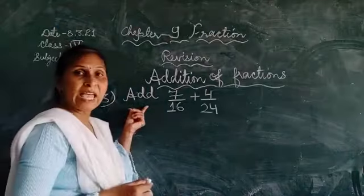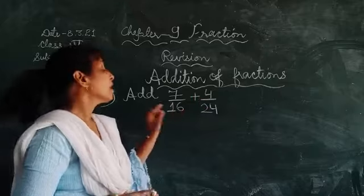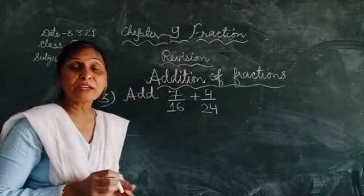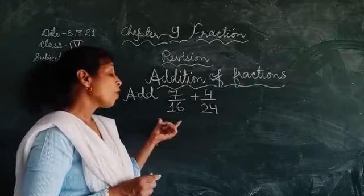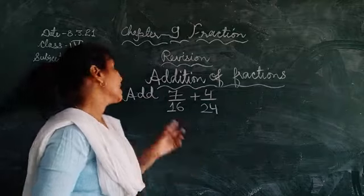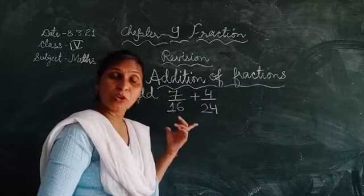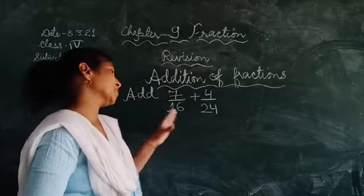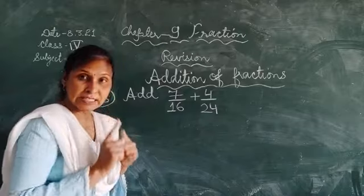Now the next one is add 7 upon 16 plus 4 upon 24. Now you see which type of fraction is this. This is the unlike fractions. When unlike fractions are there, then how we will add it. Yeh humein dekhna hai ki hum kaise add karenge. Unlike fractions mein kya hota hai? Denominators are different. To yahan dono ki denominators different hain. It means this fraction is unlike fraction. Aur jab unlike fraction given hota hai, to hum kya karte hain iska? LCM find out karna.